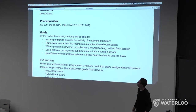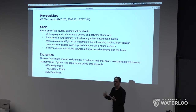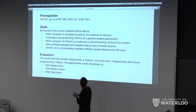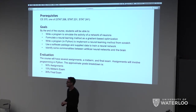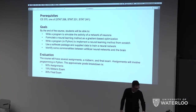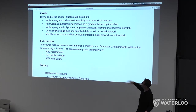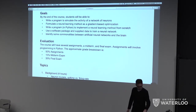By the end of the course, students will be able to simulate neural networks on a computer, write a program that trains a neural network, and formulate neural learning as a gradient descent optimization problem — that's the bread and butter of neural networks right now. Students will also be able to identify commonalities between artificial neural networks and the brain, and understand how they might tell us something about how the brain works.